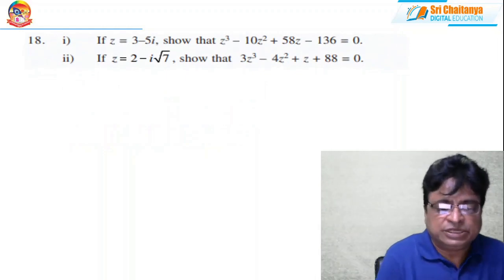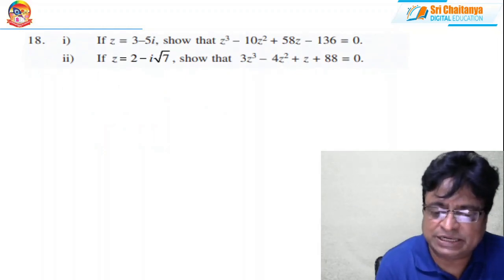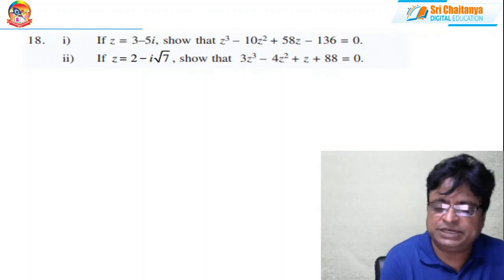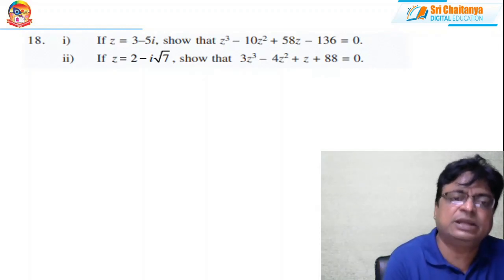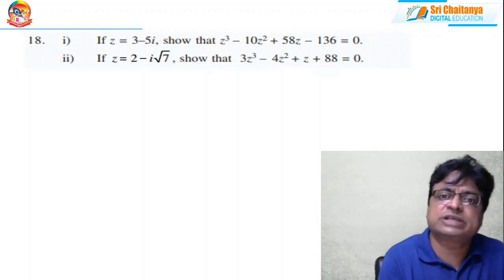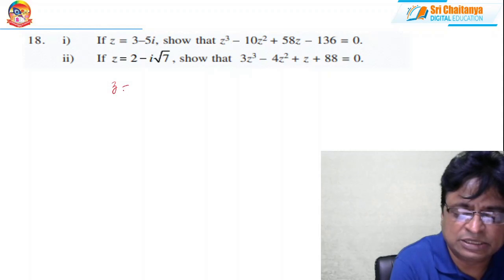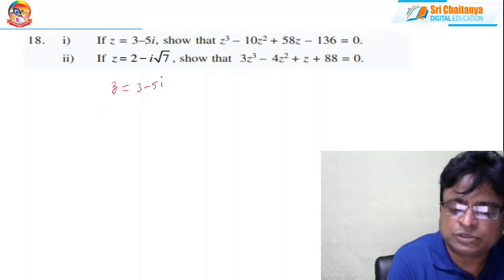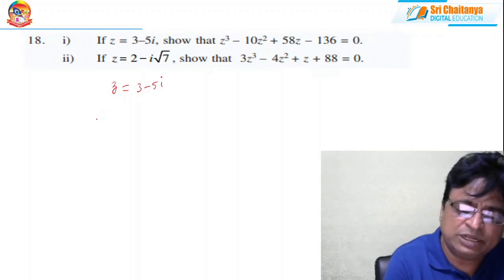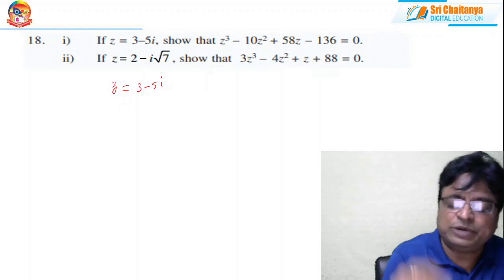Coming to problem 18: if z = 3 − 5i, show that z³ − 10z² + 58z − 136 = 0. I had given a hint on how to solve this kind of problem in our previous video. Anyhow, I am giving the technique again. z = 3 − 5i is given. You can substitute this value in the given equation, or you can use another technique.